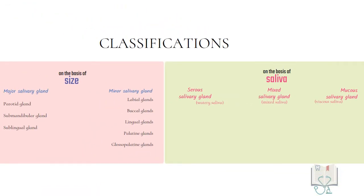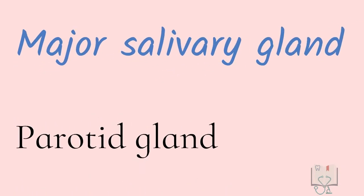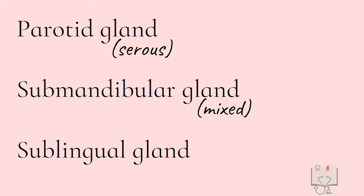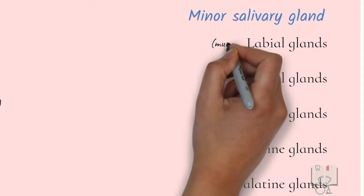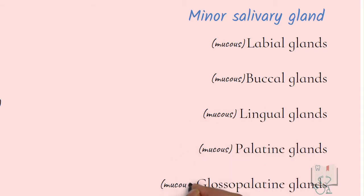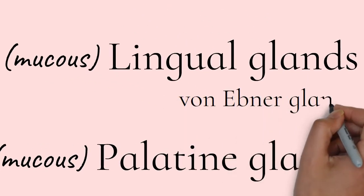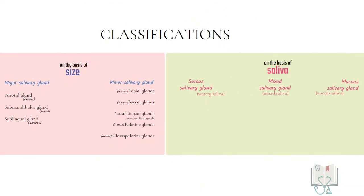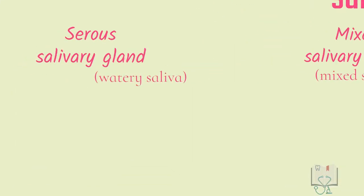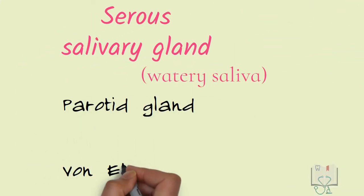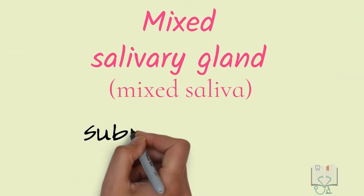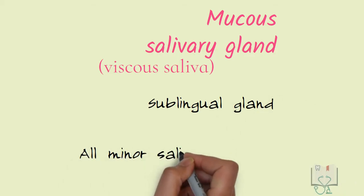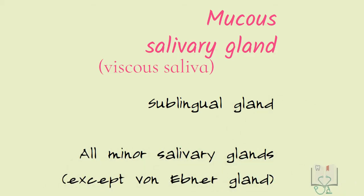Combining these two classifications: among major salivary glands, the parotid gland is serous, the submandibular gland is mixed, and the sublingual gland is mucous. Among minor salivary glands, almost all are mucous except the von Ebner glands, which are serous. Overall, serous glands are the parotid and von Ebner glands; the mixed gland is the submandibular; and mucous glands are the sublingual and all minor salivary glands except von Ebner.